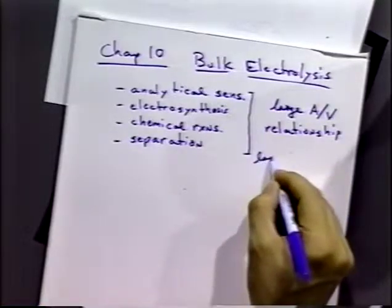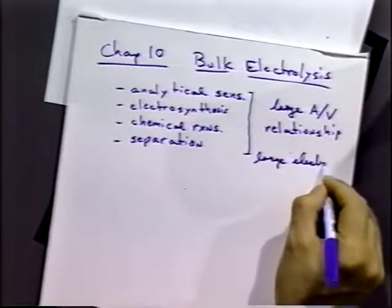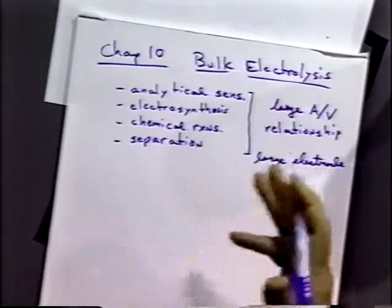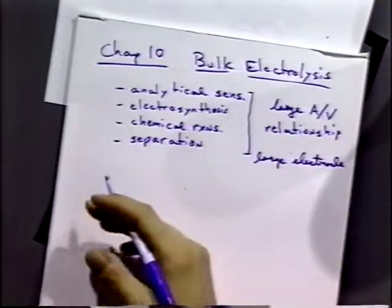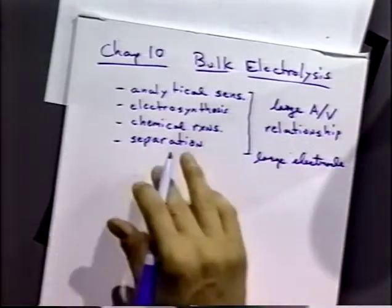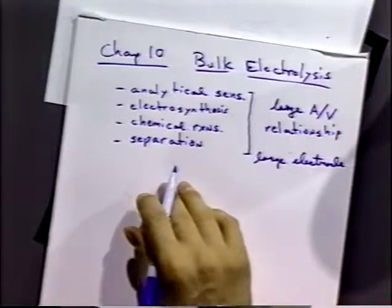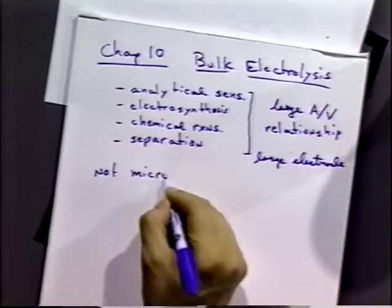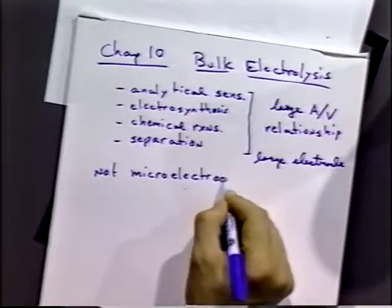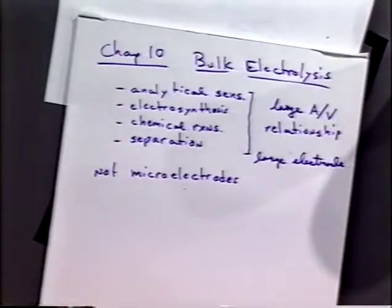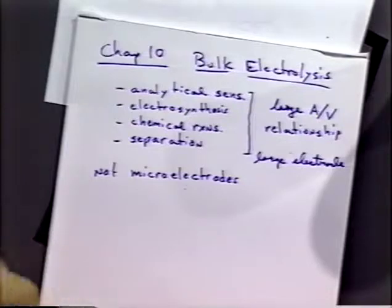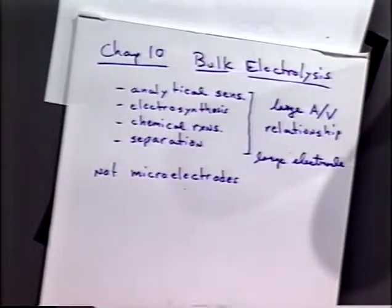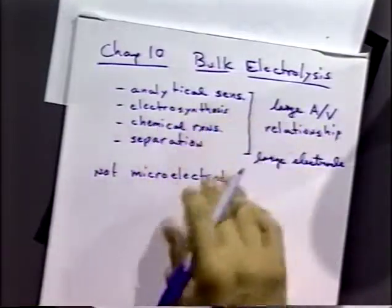So large electrodes, large voltages, large currents — instead of microamps and nanoamps, we're talking about amps and milliamps, sometimes kiloamps. These are definitely not what you'd call micro electrode techniques. There is the old-fashioned use of the word micro electrodes to refer to electrodes of centimeter size, but these are electrodes of major size. Anything bigger than a centimeter would not be a micro electrode in that sense.